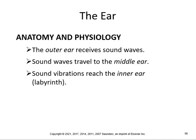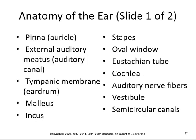Now let's go on to the ear. This is not an anatomy and physiology class, but you should know the general structure. The outer ear receives sound waves; they travel to the middle ear, and then sound vibrations reach the inner ear, which is the labyrinth. Structures include the auricle/pinna, external auditory meatus, tympanic membrane, malleus, incus, stapes, oval window, Eustachian tube, cochlea, auditory nerves, vestibule, and semicircular canals.